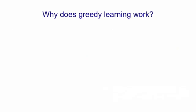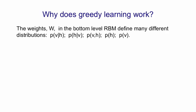Now let's look at why the greedy learning works — that is, why it's a good idea to learn one restricted Boltzmann machine and then learn a second that models the patterns of activity in the hidden units of the first one. The weights of the bottom-level restricted Boltzmann machine actually define four different distributions in a consistent way: the probability of the visible units given the hidden units, the probability of the hidden units given the visible units, the joint distribution of v and h, and the prior distributions over v and h individually.